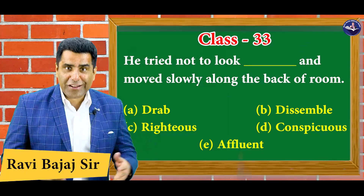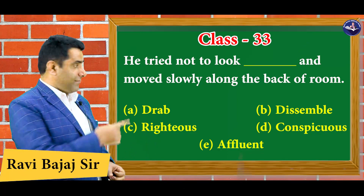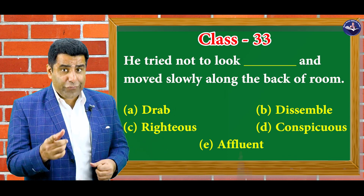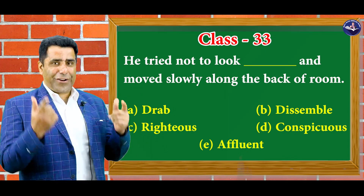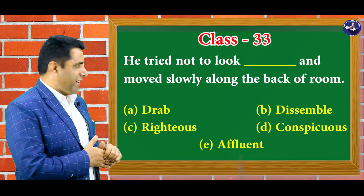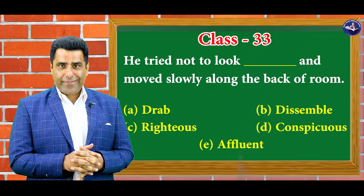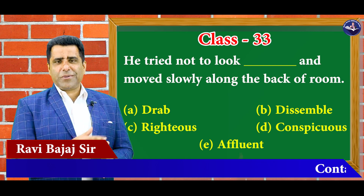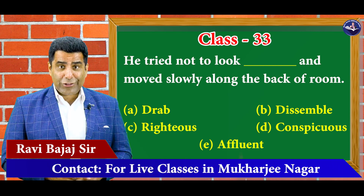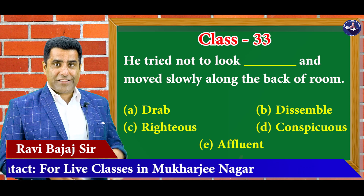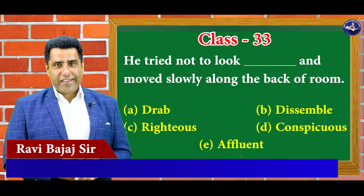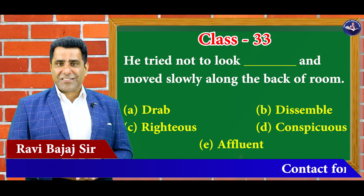So hello guys, welcome to this vocab session. Prashn aap ke saamne — five options and you have to find out the correct one. Bina dictionary ya Google mein dekhe bataiye iska right answer kya hoga? Ata hai toh jaldi bataiye, nahi toh copy uthaaiye, pen uthaaiye aur shuru ho jaiye. Hum karenge through mnemonics, through pictures. Main ek ek word karke aapko explain karta hoon, phir iska answer talaashenge.